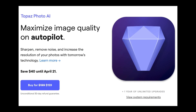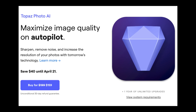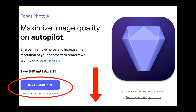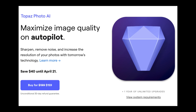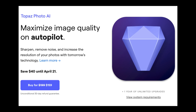Before I get started, I just want you to know that Topaz Photo AI is on sale right now. You can save $40 off until April 21st, 2023, so you end up getting it for $159. If you click on my affiliate link in the description below this video, it'll take you to the sale. When you use that affiliate link, I make a small commission and that helps me keep tutorials coming your way — I truly appreciate it and thank you.